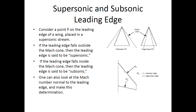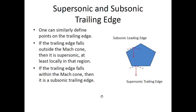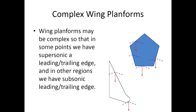Subsonic and supersonic leading and trailing edges are illustrated from the Virginia Tech reference by Professor Bill Mason (formerly of Grumman, recently deceased). These concepts — subsonic leading edge, supersonic leading edge, subsonic trailing edge, supersonic trailing edge — are determined simply by examining the Mach number component normal to the edge.